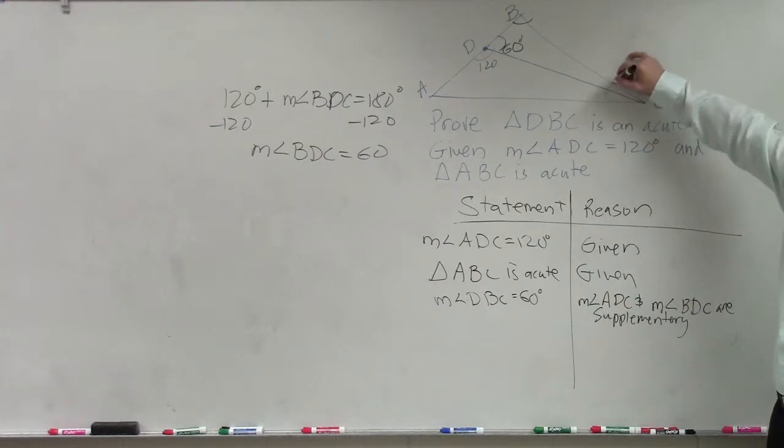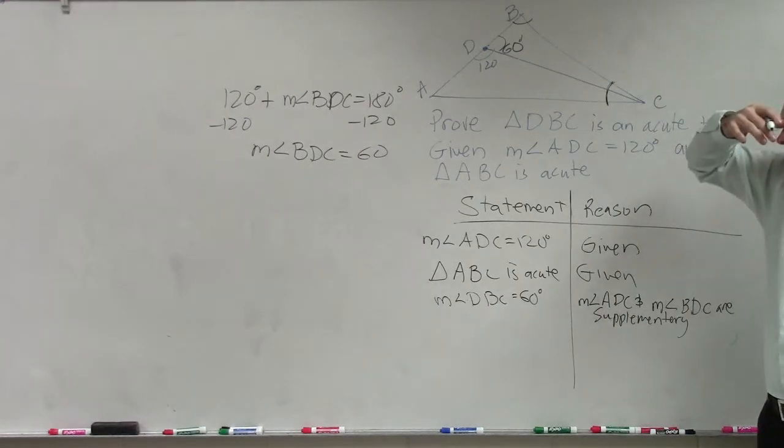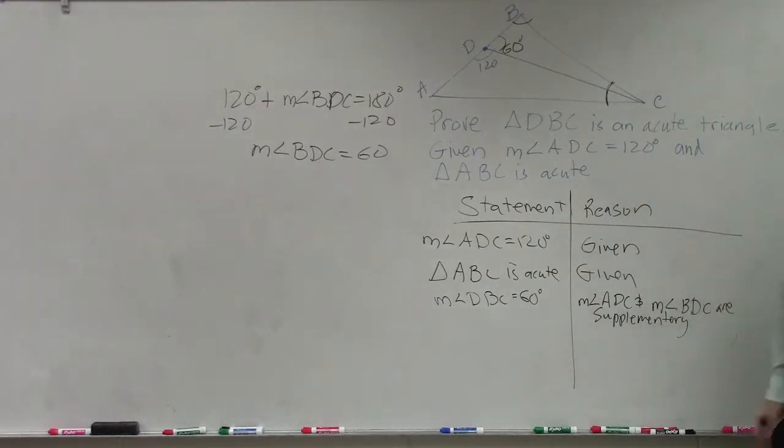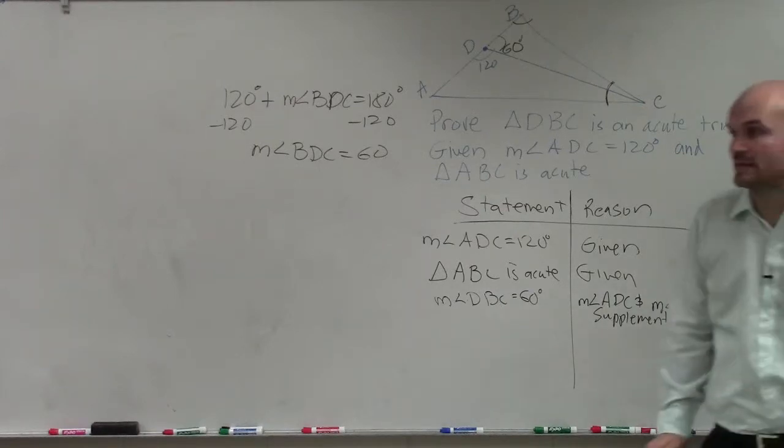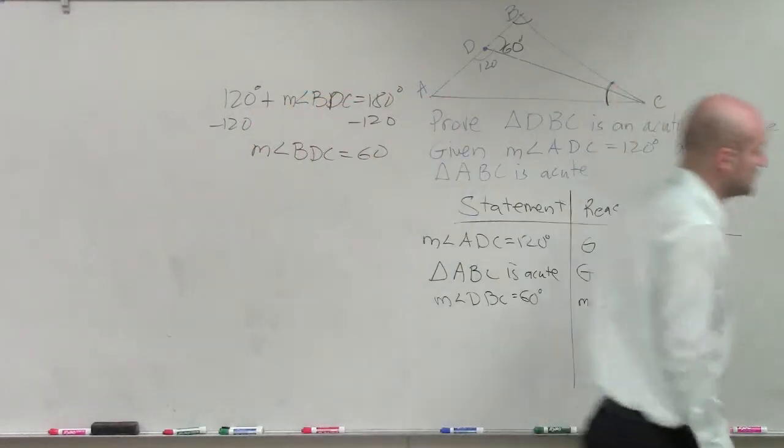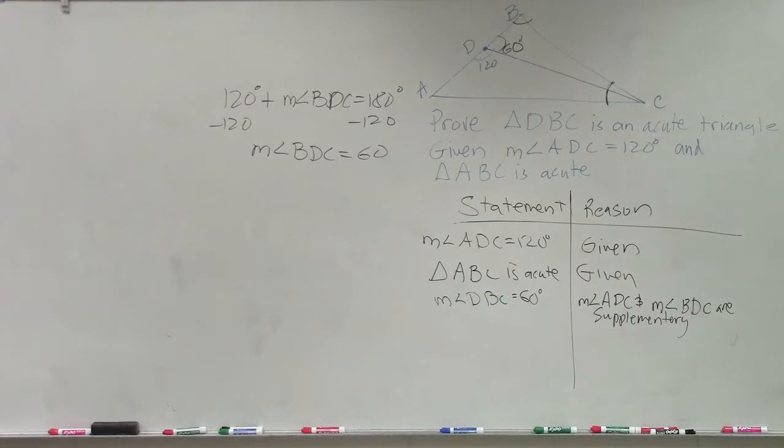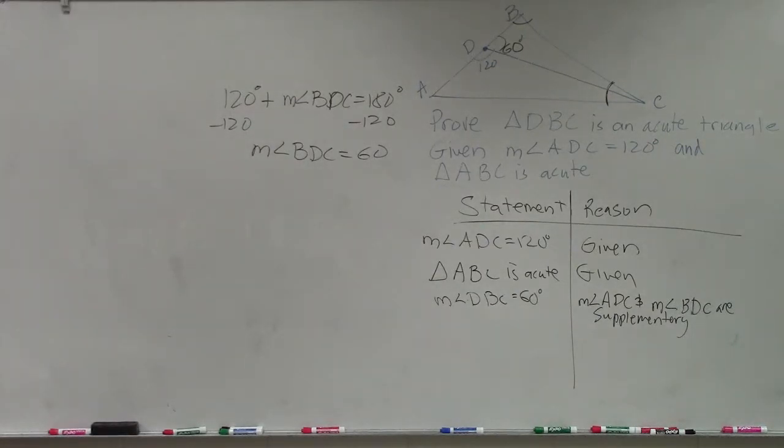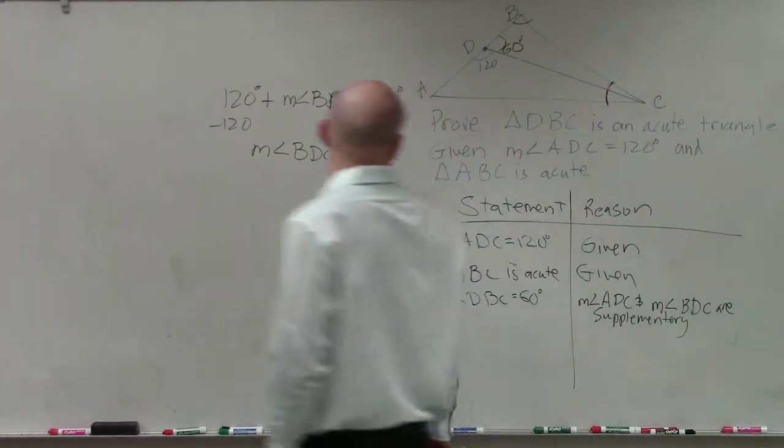But what do we know about the addition of these two angles? What is going to be the measure of ACD and measure of angle BDC? Does anybody know the measure of those two? Well, we don't know the measure, but what are we going to have? Is that going to be an acute angle, or? Yeah, it's going to be a definition of the acute. And then I have angle C is acute.